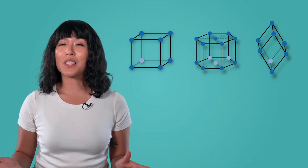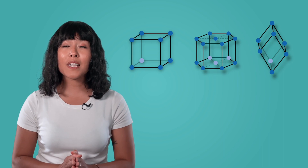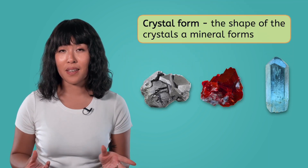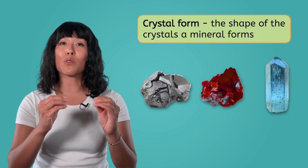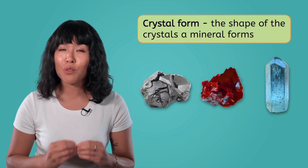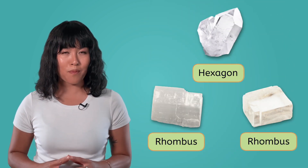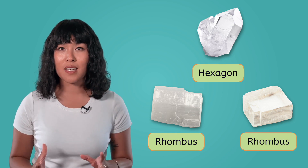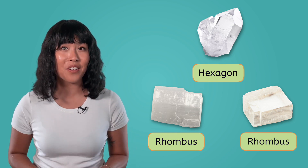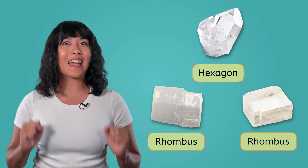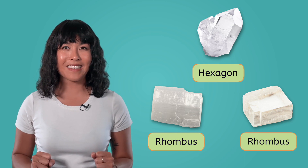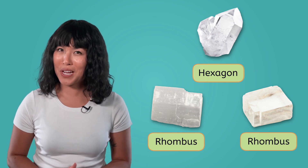As we know, the atoms in minerals are organized into unique patterns. These patterns cause each mineral to form crystals of a certain shape. This shape is called a mineral's crystal form. It looks like two of my minerals' crystal forms are in the shape of a rhombus, but one is hexagonal. That might help us identify it. Let's look at their other characteristics.